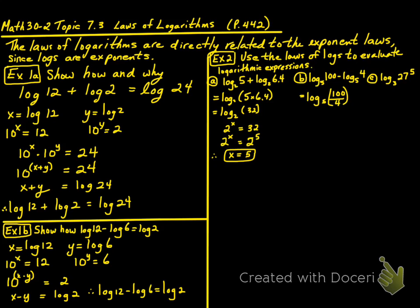In part B, we have log₅(100) - log₅(4). This equals log₅(100/4) = log₅(25). Since 5^x = 25, x equals 2.